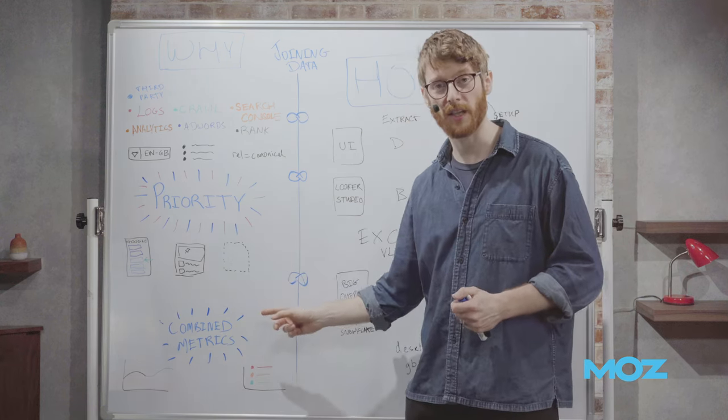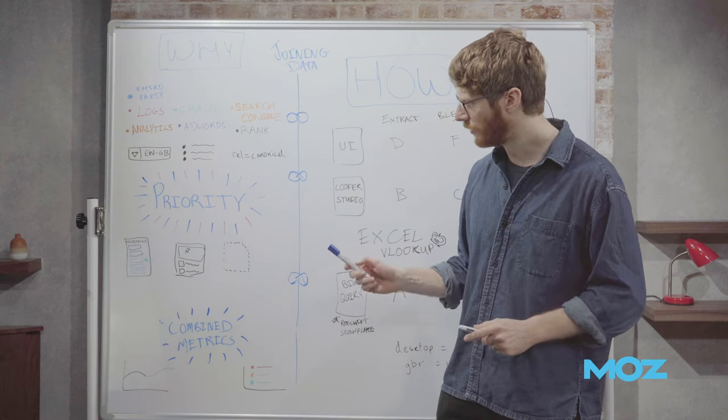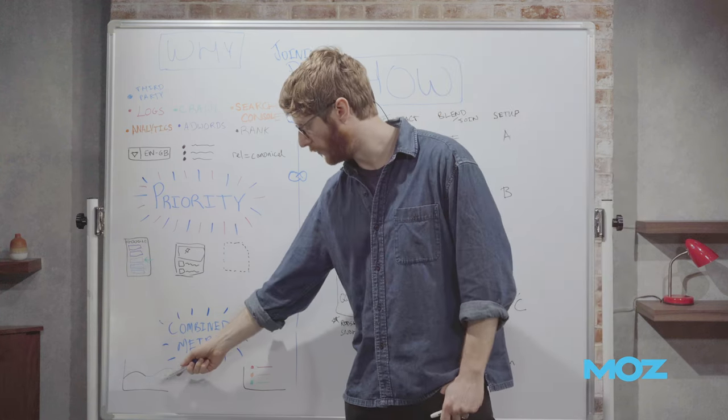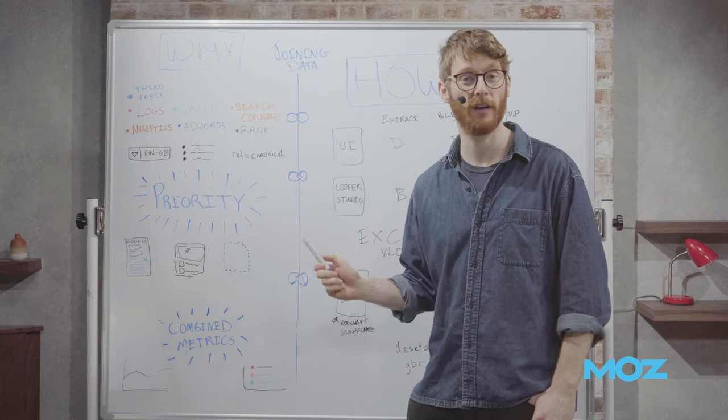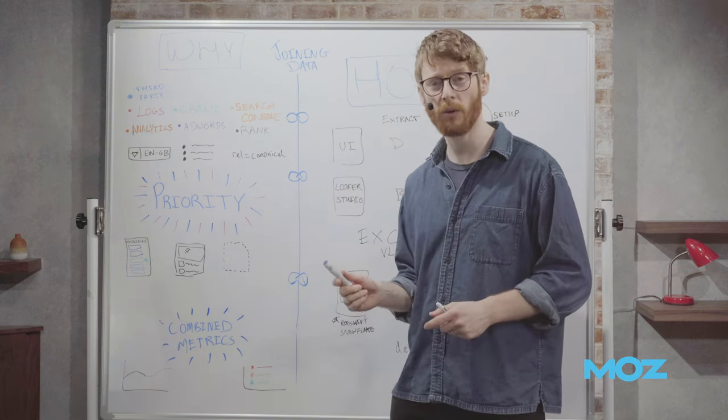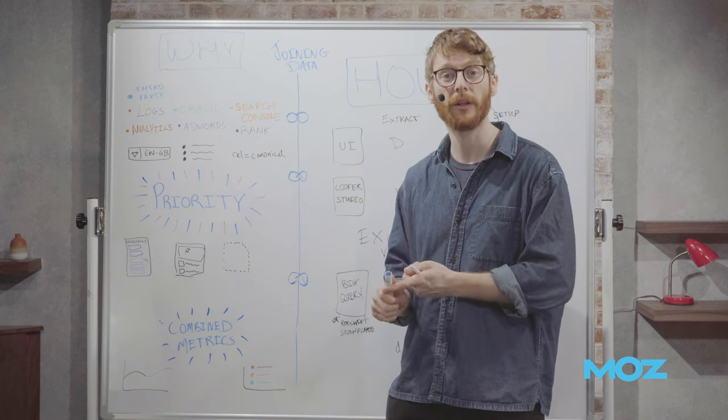So that's priority. And the final one is combined metrics. That's the other big thing. Sometimes you literally just can't get the answer without joining two things together. The one that many people will have bumped into here is UA and GA4. So obviously Universal Analytics Sunset last year. And if you want to have year-on-year traffic, if you want to have their year-on-year numbers for forecasting,